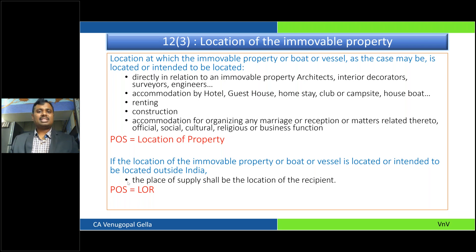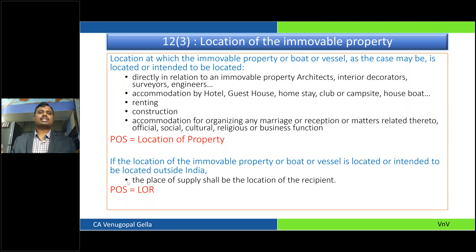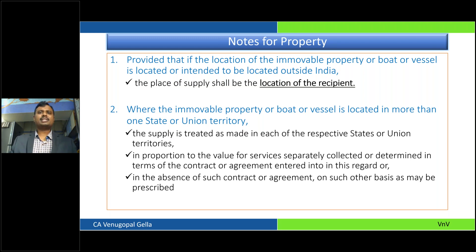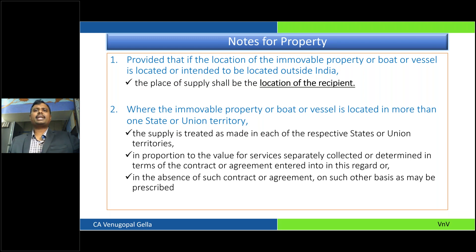In the case of property being constructed outside India — say you give me a contract to construct a property in Dubai, and you are in Delhi — the place of supply would be wherever the recipient is, which is Delhi. It is not deemed as an export transaction. If the property is coming up in multiple locations, the IGST rules explain the mechanism of splitting the transaction. Under a single contract covering multiple states, you should find a way of allocating — each state where the immovable property is coming up would get their respective share.